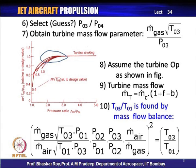The choice of P03/P04, the operating turbine pressure ratio, must be made carefully to ensure the work done is available. Once on the flat plateau of the turbine map, the mass flow remains constant. So the choice of P03/P04 is governed by the work done requirement from the compressor, and the mass flow through this operation will likely remain constant once it reaches the choking condition.